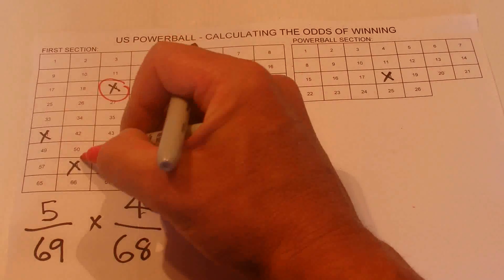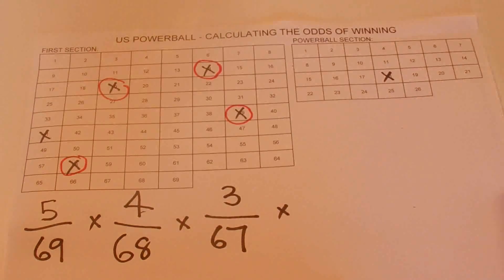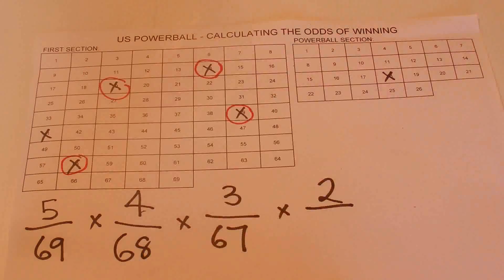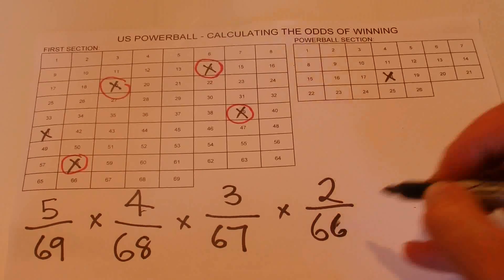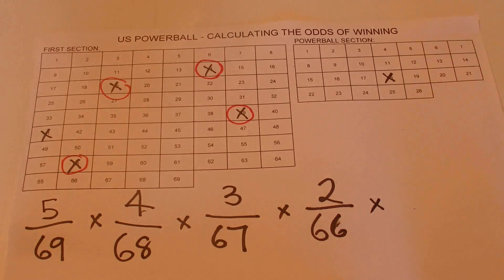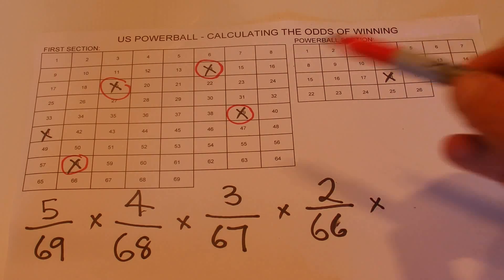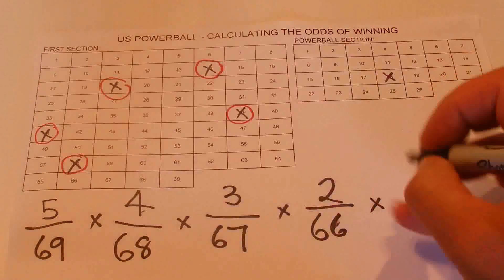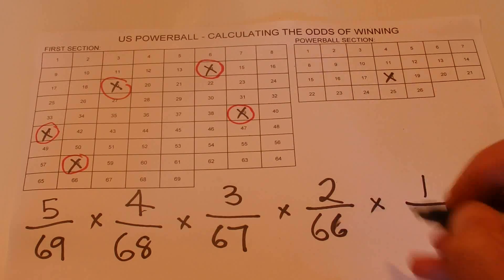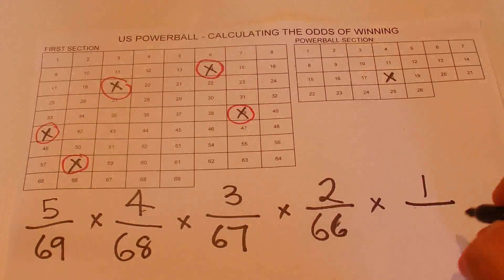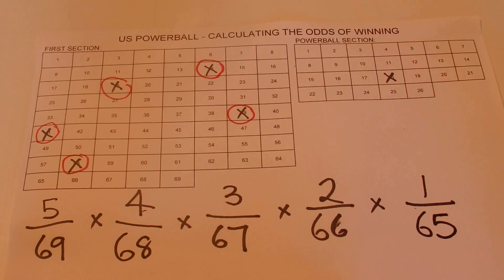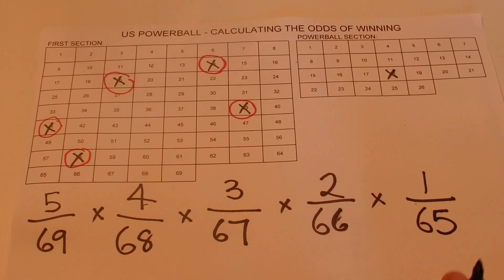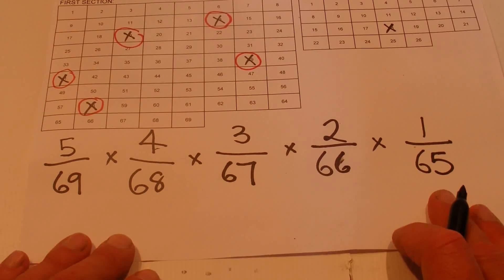When the fourth number comes out, you've got two numbers left on your grid — two chances in 66. Then for the last one, you've got one number left on your grid to match out of a possible 65 numbers remaining in the drum, so you've got one chance in 65.